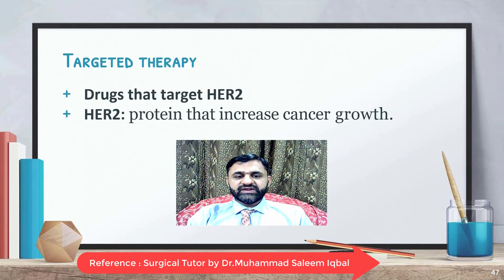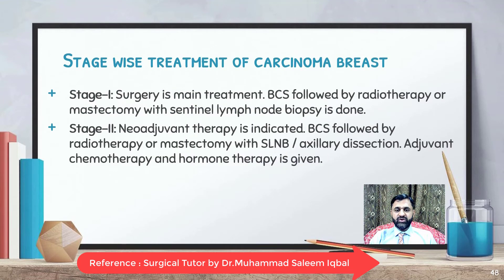Targeted therapies include drugs that target human epidermal growth factor receptor 2 (HER2), which promotes cancer growth. Examples include trastuzumab, pertuzumab, and lapatinib. Stage 1 treatment: surgery is the main treatment — breast conservative surgery followed by radiotherapy, or mastectomy with sentinel lymph node biopsy. If the tumor is receptor-positive, adjuvant hormone therapy markedly reduces recurrence. Stage 2: neoadjuvant therapy is indicated, followed by breast conservative surgery with radiotherapy or mastectomy with sentinel lymph node biopsy or axillary dissection, plus adjuvant chemotherapy and hormone therapy.